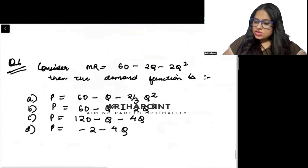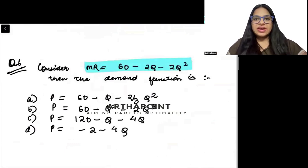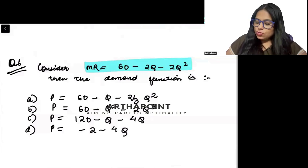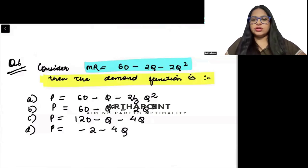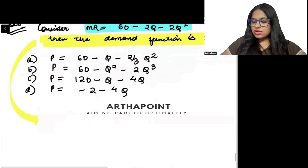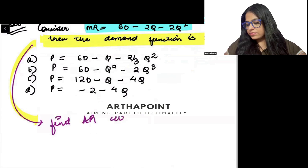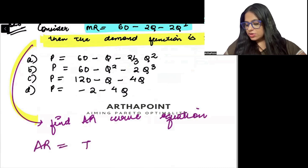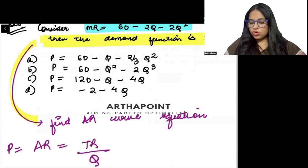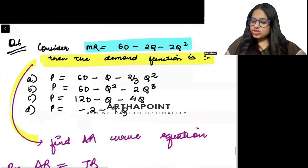Come to the next question. This is your given marginal revenue curve as 60 minus 2q minus 2q square. And you need to go ahead and find the demand function. What do you need to find? You need to find the demand function. Demand function is nothing but it is asking you to find the AR curve equation. But the AR curve is nothing but total revenue by quantity. AR is only called as price. And total revenue is nothing but integration of marginal revenue.